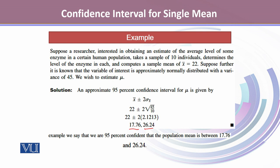In this example, we are 95% confident that the population mean falls between 17.76 and 26.24.